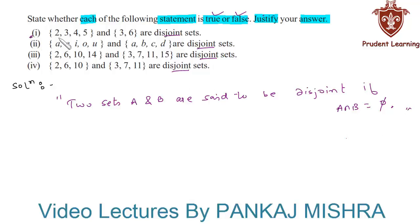One by one. Here we have a set containing elements 2, 3, 4, and 5, and the second set has elements 3 and 6. Here we can see that 3 is common to both sets. Hence, their intersection contains the element 3, which is not a null set. Therefore, we can say that they are not disjoint, hence the given statement is false.